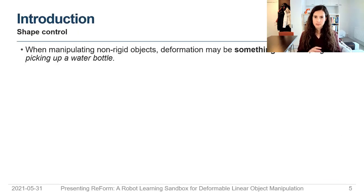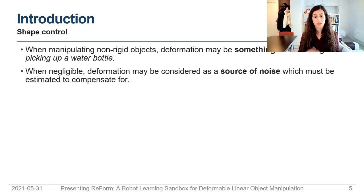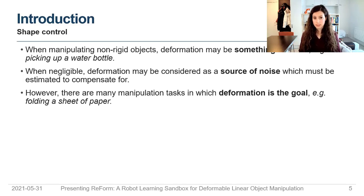We identify the fact that sometimes deformation is just something we want to avoid, like when you pick up a bottle and want to avoid spilling by pressing too much. Sometimes it can also be negligible, and we can just consider it as a source of noise in our manipulation task. However, there are many manipulation tasks where the deformation is the actual goal, and we can categorize them into two main classes.